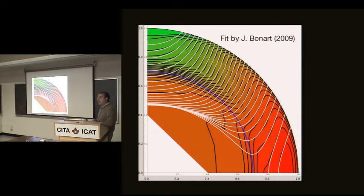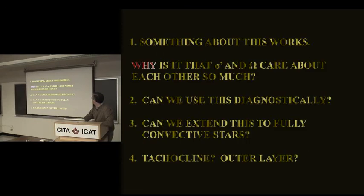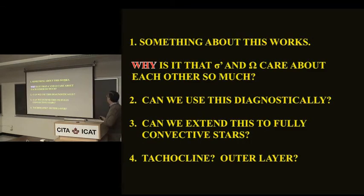This defines implicitly sigma as a function of omega. Once you fit to the data, you get this — and if it fits, that's right. He did a curve fitting, but what it does physically is give you this dynamical connection between sigma and omega. And in fact, that's the interesting thing about this theory — you can imagine using it diagnostically for exactly that kind of a calculation. A lot of questions: something about this works. Why is it really that sigma prime and omega care about each other so much? Can we use this diagnostically? Yes. Can we extend this to fully convective stars? Yes. What about the outer layer?